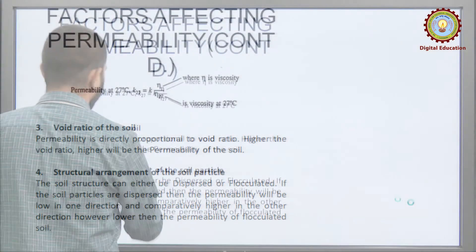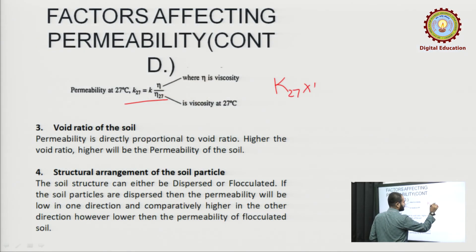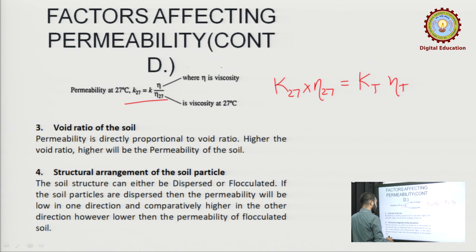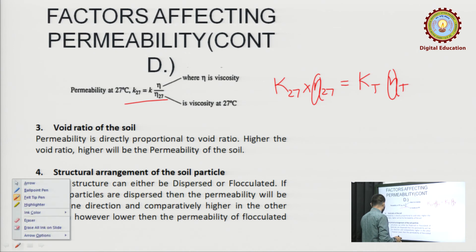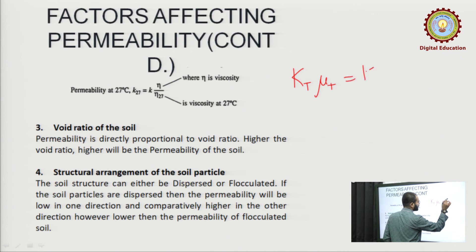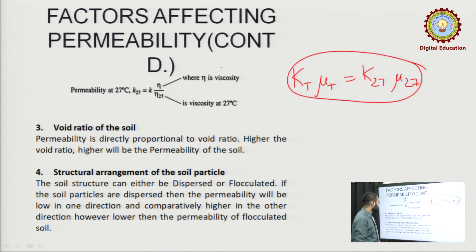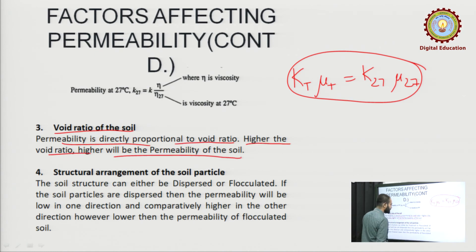Third factor: void ratio. Higher void ratio means higher permeability — they are directly proportional. Higher the void ratio, higher will be the permeability. This is straightforward.